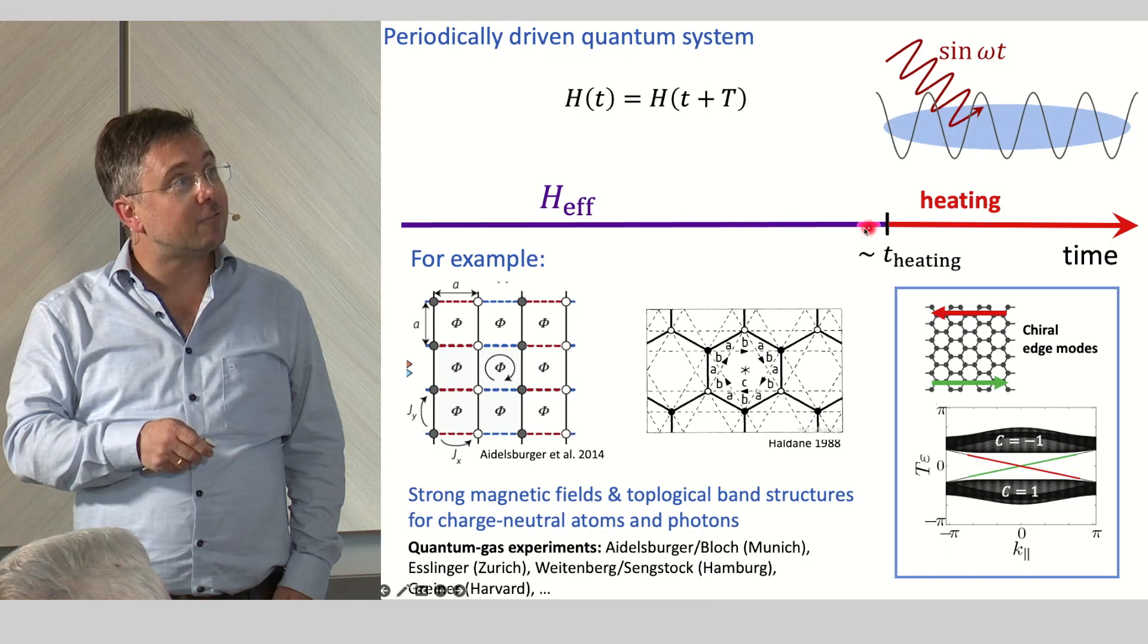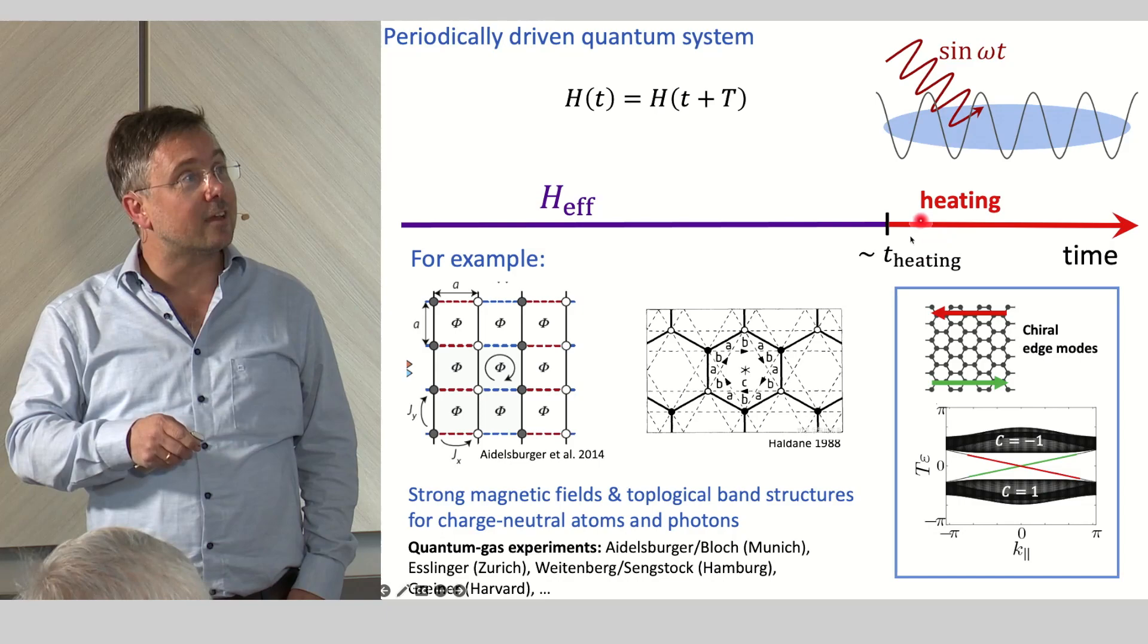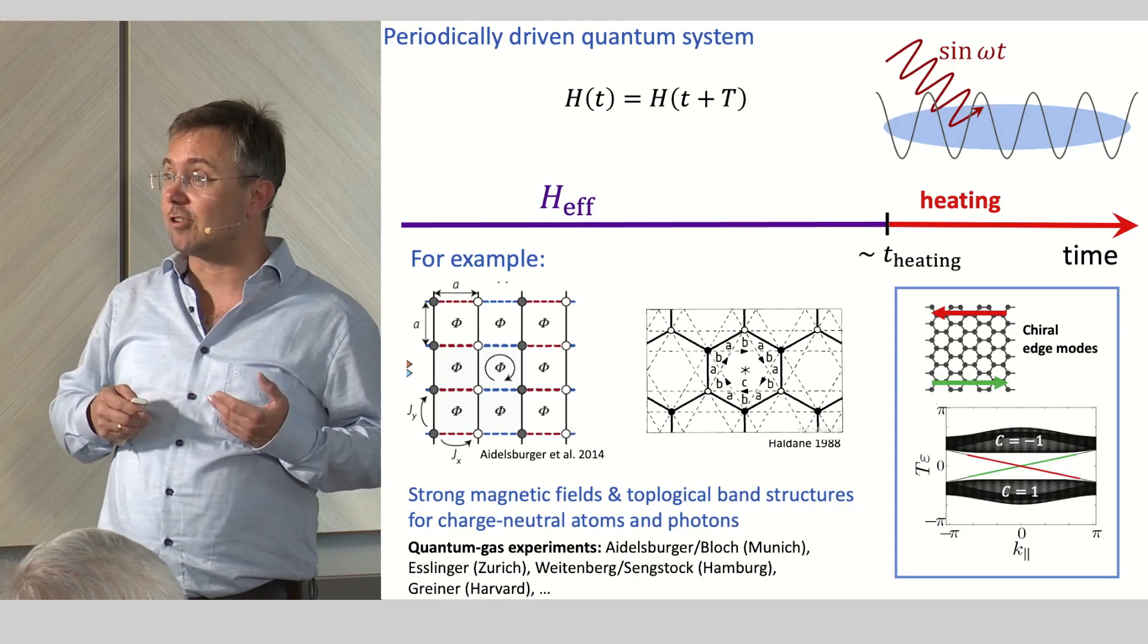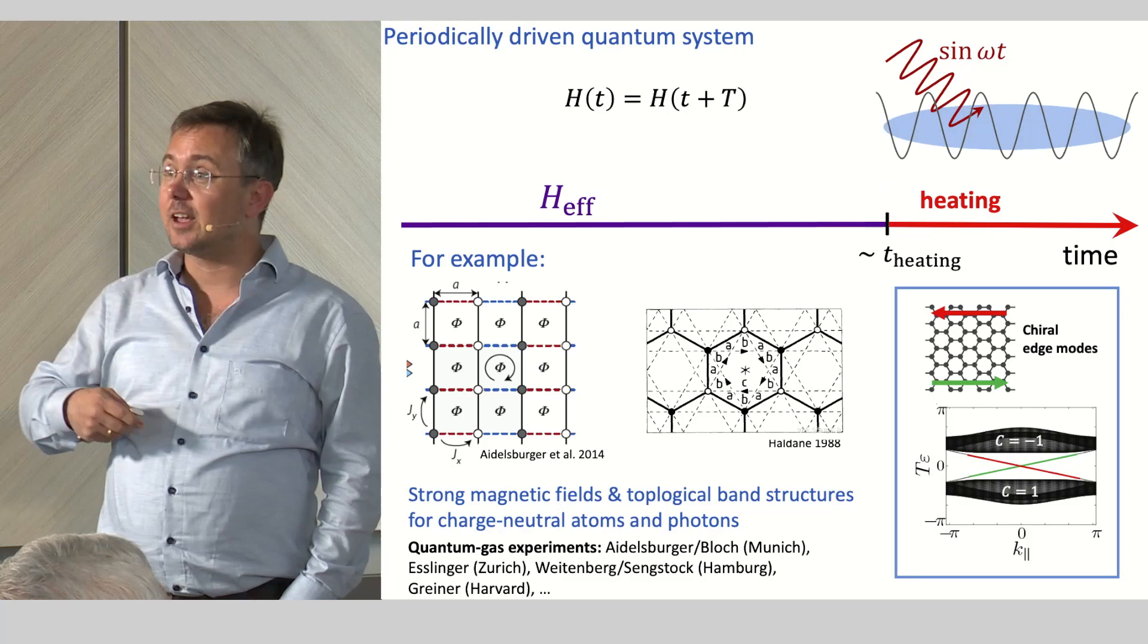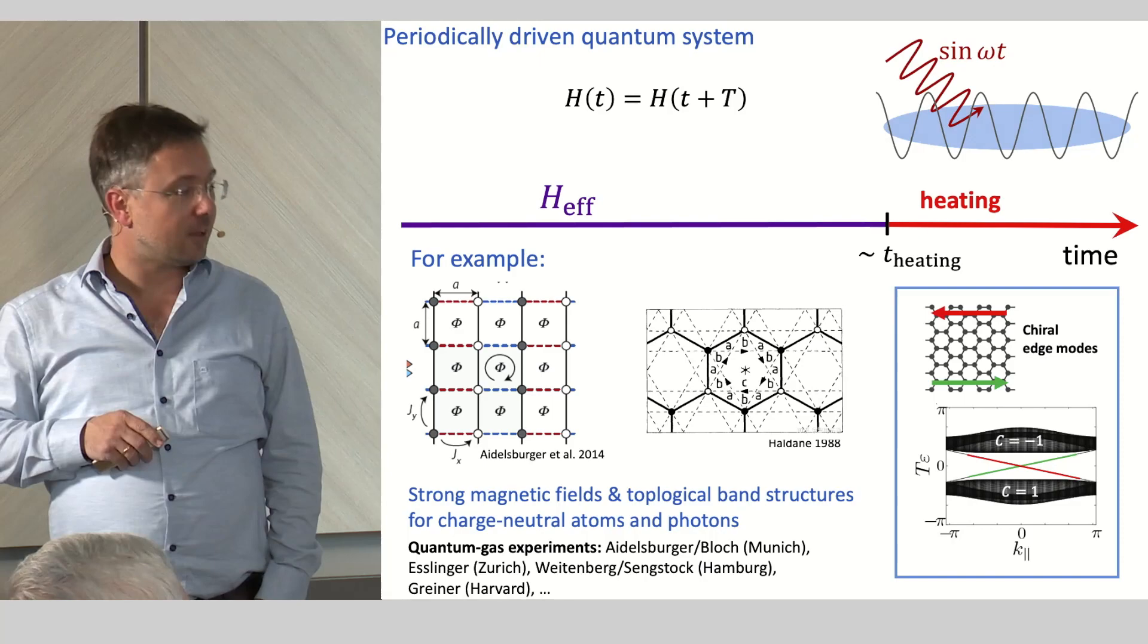Second, you see this heating here. You might wonder if it's possible to stabilize a low temperature state of this effective Hamiltonian as a steady state of the dynamics so that this heating is suppressed by the environment. This is a second motivation. And the third motivation is that you might also use this for a completely different type of Floquet engineering where you want to engineer some interesting non-equilibrium steady state into which the system runs, which is not just a low temperature state of H effective, but something completely different, which is maybe interesting for some other reason.